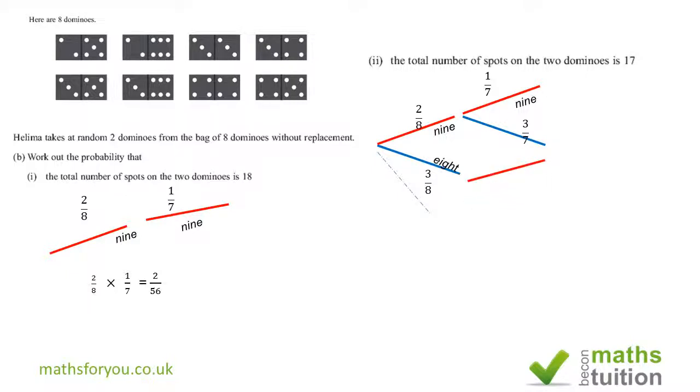Similarly, if we picked 8 the first time round, it means that we have only 7 dominoes left and we still got 2 nines left, so the probability of picking a 9 second pick would be 2 over 7. Similarly, having picked 8 the first time, the number of dominoes with 8 spots will now reduce to 2, and the probability of picking 8 the second time round is 2 over 7.